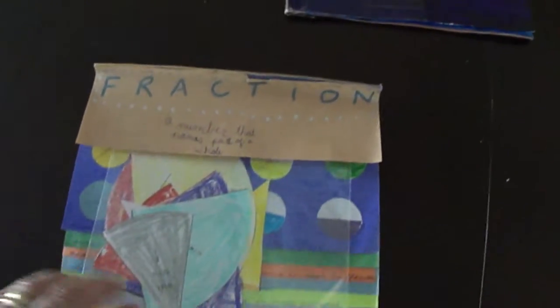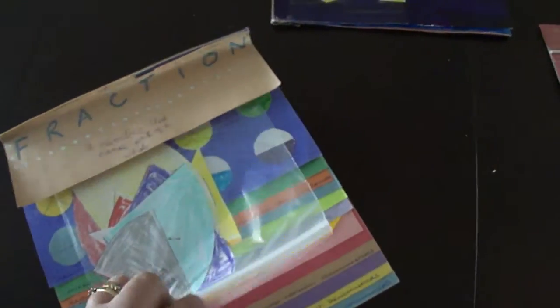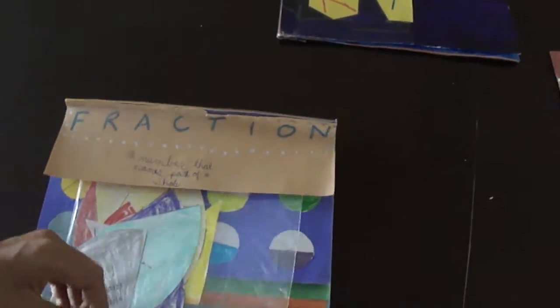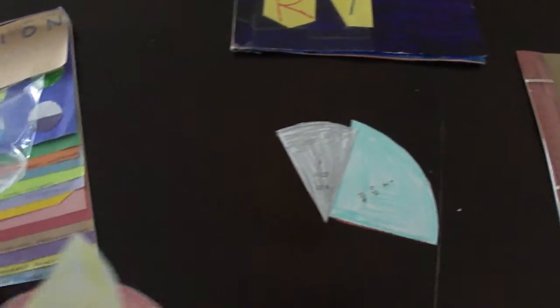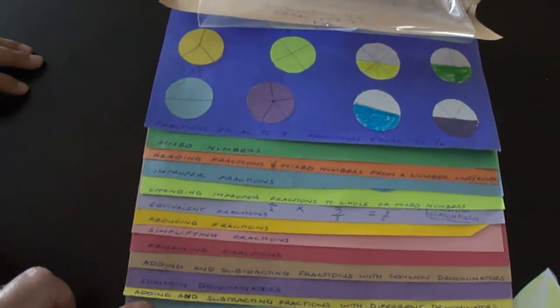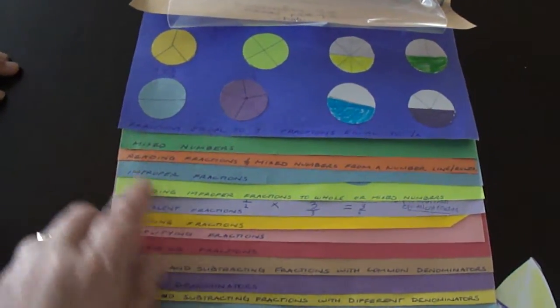Now here's a layered lookbook. We've got a ziplock bag here with all her manipulatives in it, all the fraction pieces from circles so she can play games and see what's equivalent. Inside the layered lookbook, she's got all of these topics. Each different page here is labeled with a different thing.